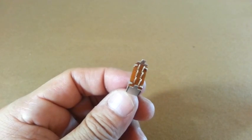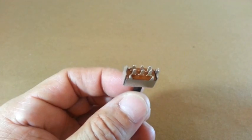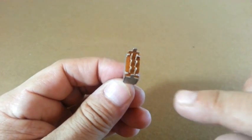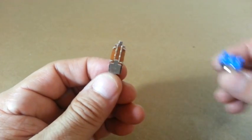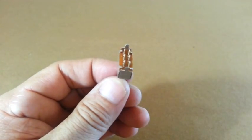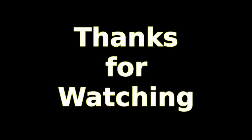You can also use one double pole, double throw switch like this. You can see the two rows of contacts and this is essentially two of these switches in one unit.